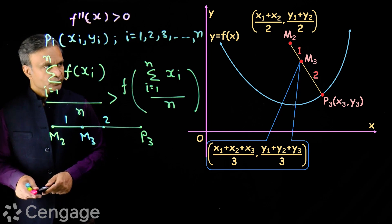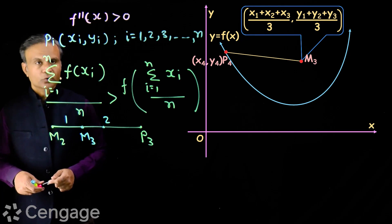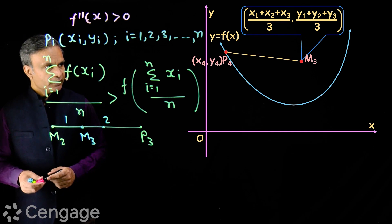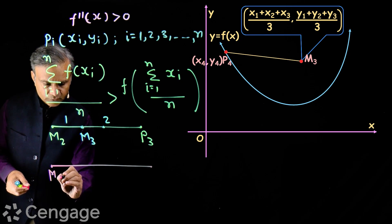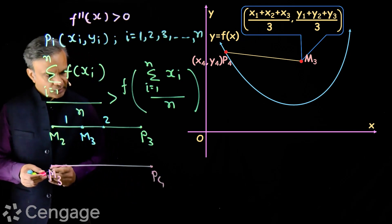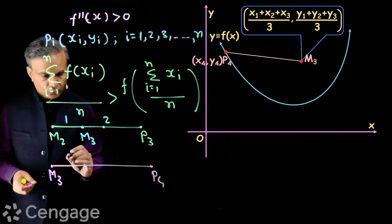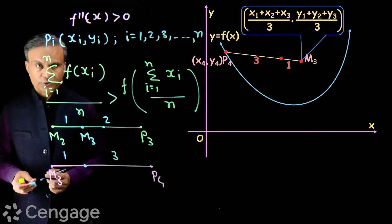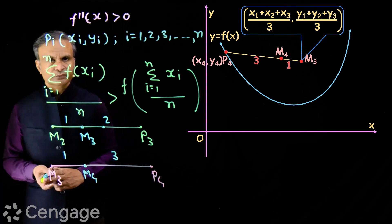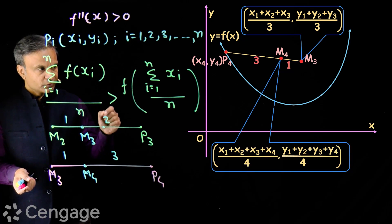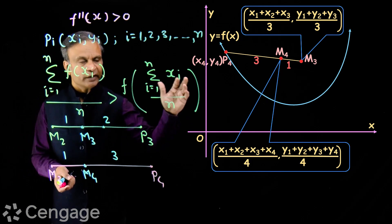The coordinates of M3 will be ((x1 + x2 + x3)/3, (y1 + y2 + y3)/3) — by the section formula. Then we consider point P4 on the curve having coordinates (x4, y4). We join points M3 and P4, and on this join we consider the point which divides M3P4 in the ratio 1 to 3. Suppose this point is M4.